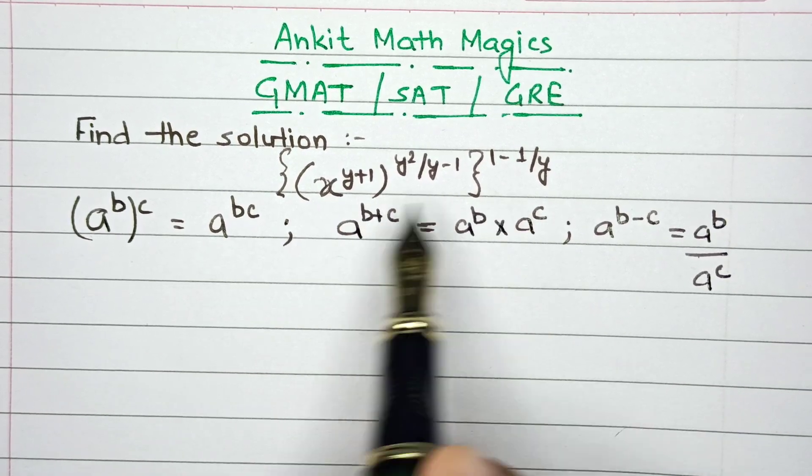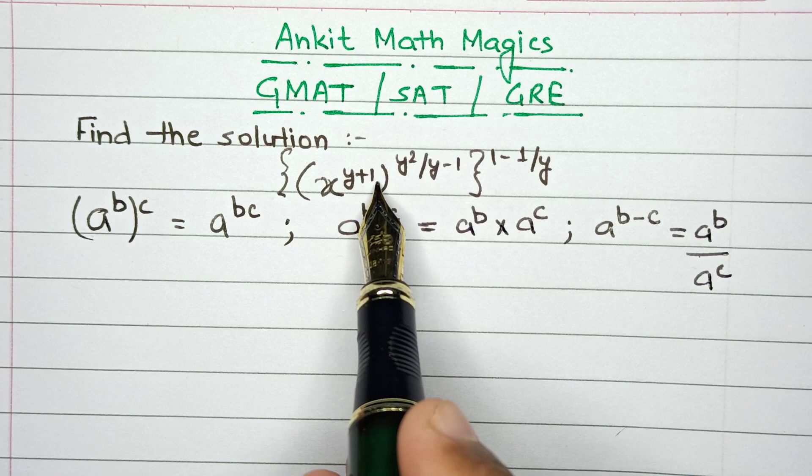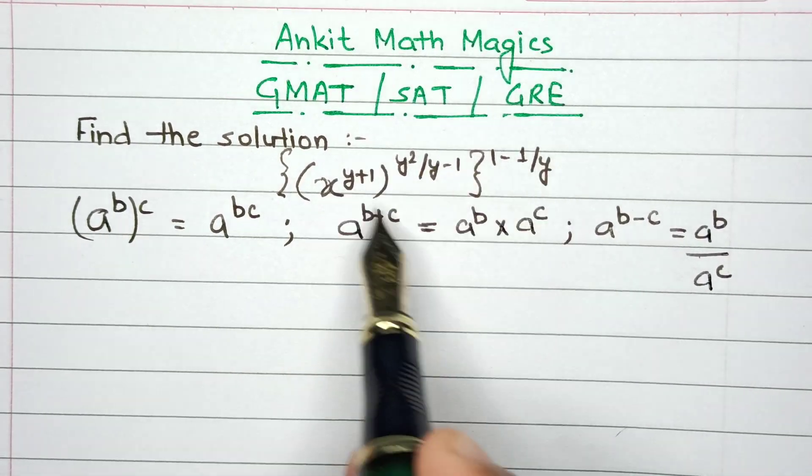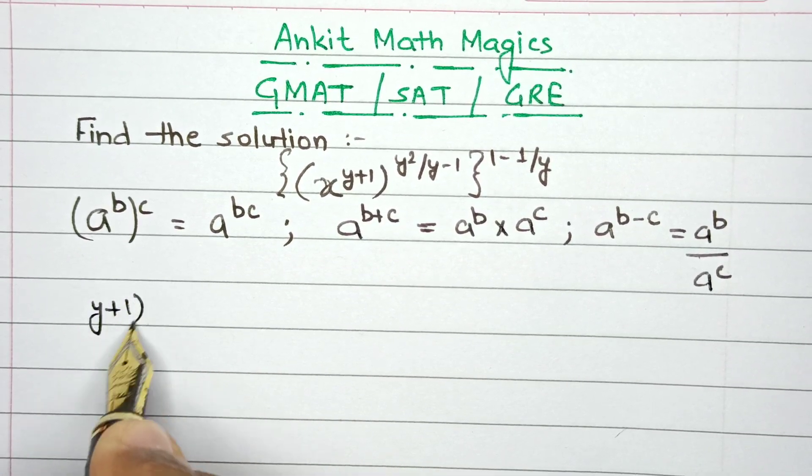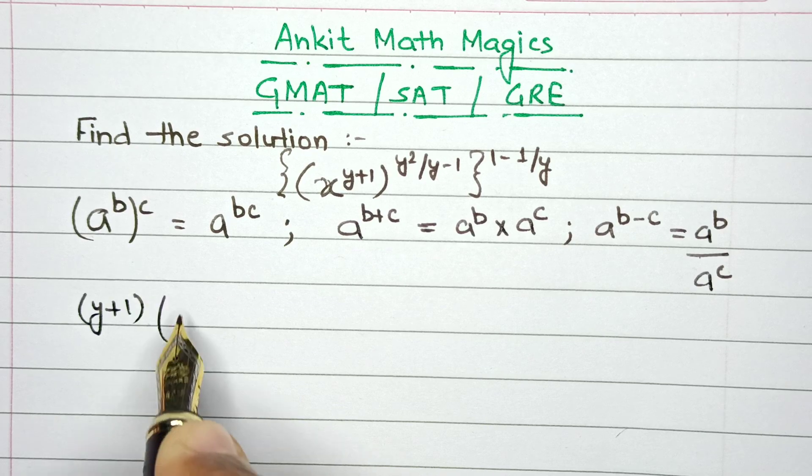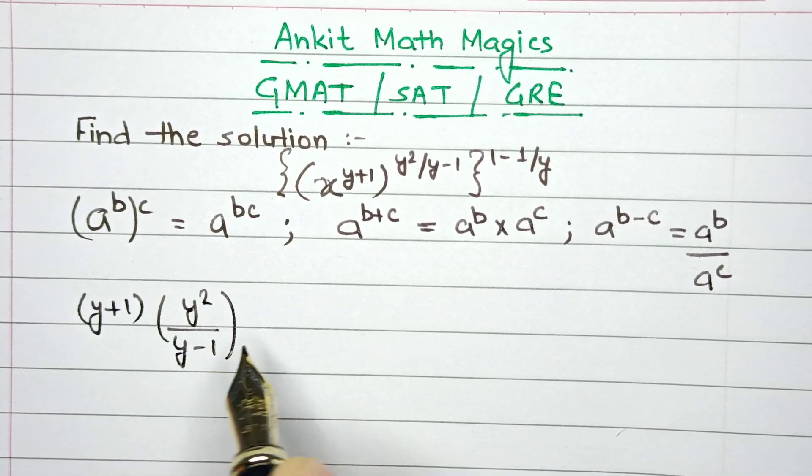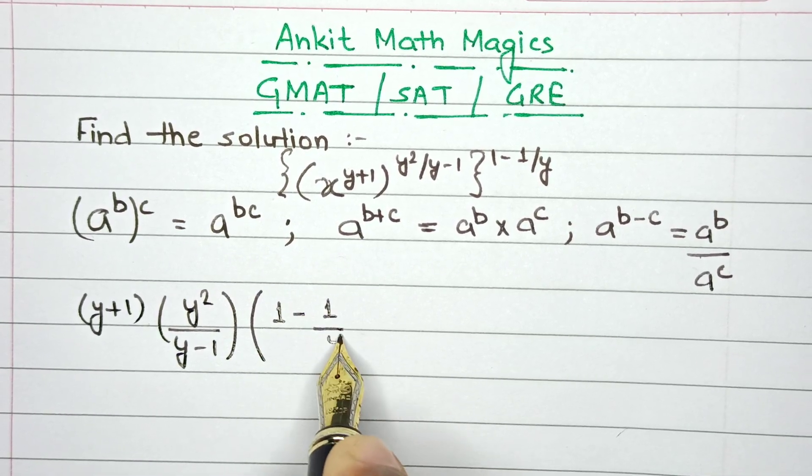In this particular problem, we'll use the first property because all three powers are multiplied together. Let's focus on the powers first. In the inner bracket we have (y+1), in the outer bracket (y²/(y-1)), and in the outermost bracket (1-1/y).